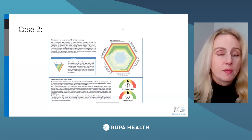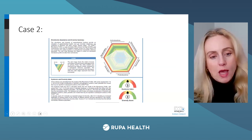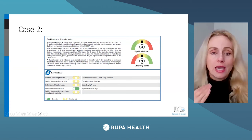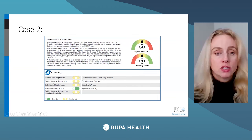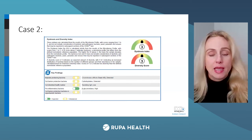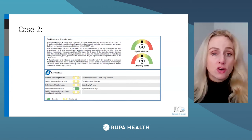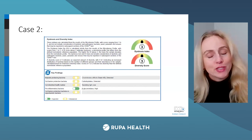For key findings: her butyrate producers are too low, so this patient needs butyrate-producing substrates via the soluble fiber approach. The gut barrier protective bacteria are too low — that's going to be the Akkermansia and the Ruminococcus. We want to support them, and polyphenols are warranted. Studies have shown that one to two grams of polyphenols per day is associated with decreased risk of developing chronic disease.